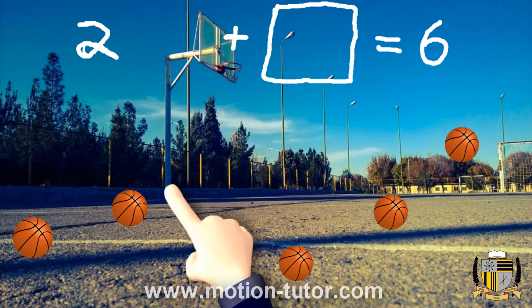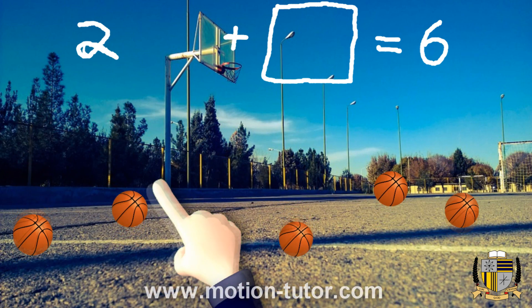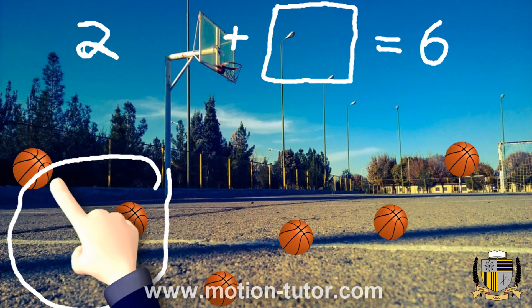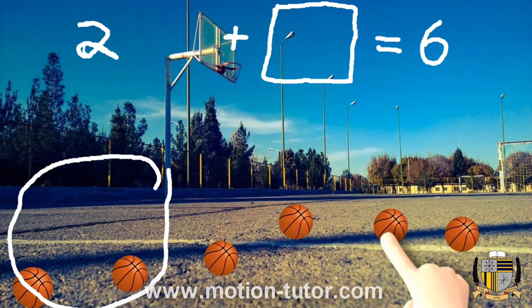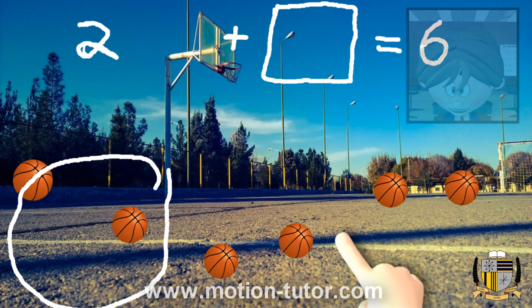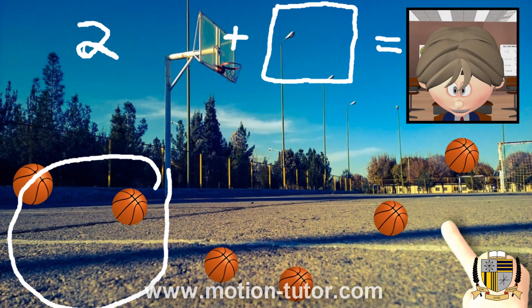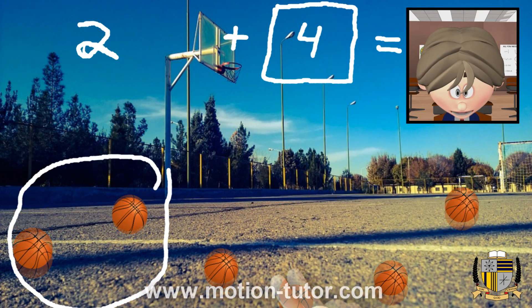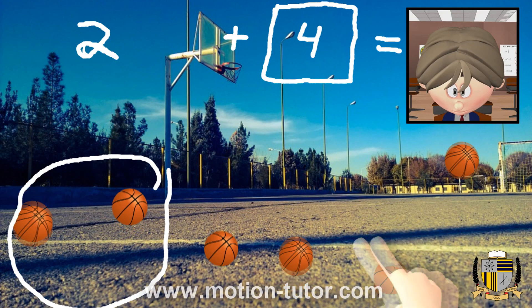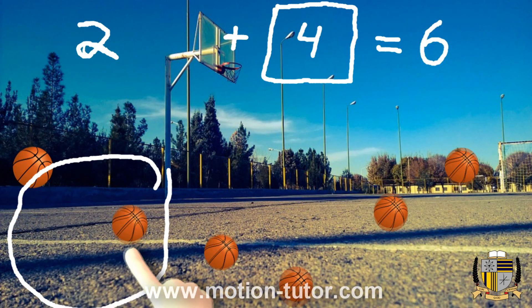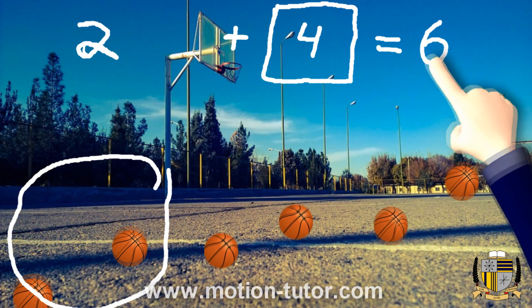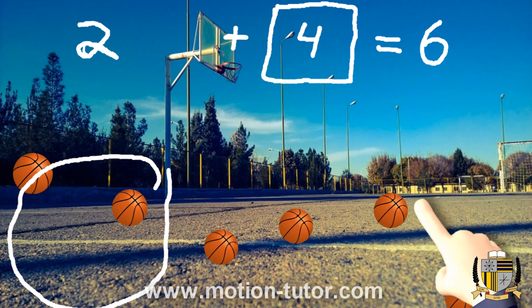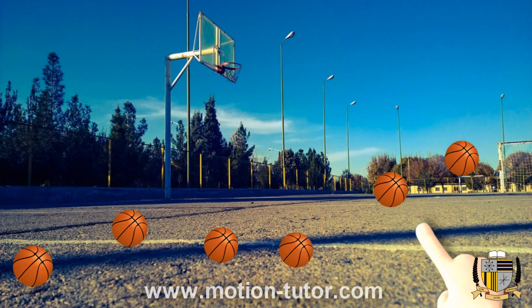So how many came later? Remember, these two were there already. And that means these four were the basketballs that came later — one, two, three, four. Four basketballs came later to add to my original two to make a total of six. So two plus four is equal to six.